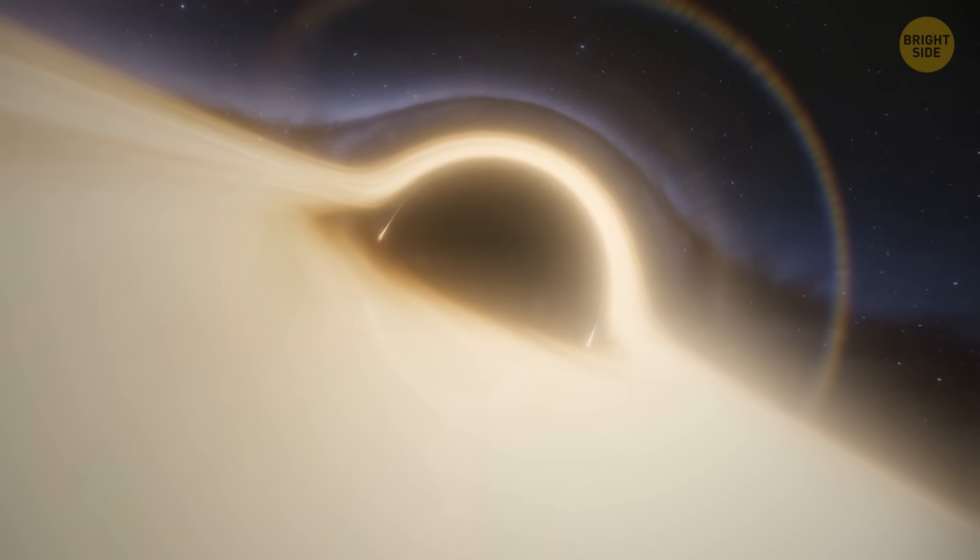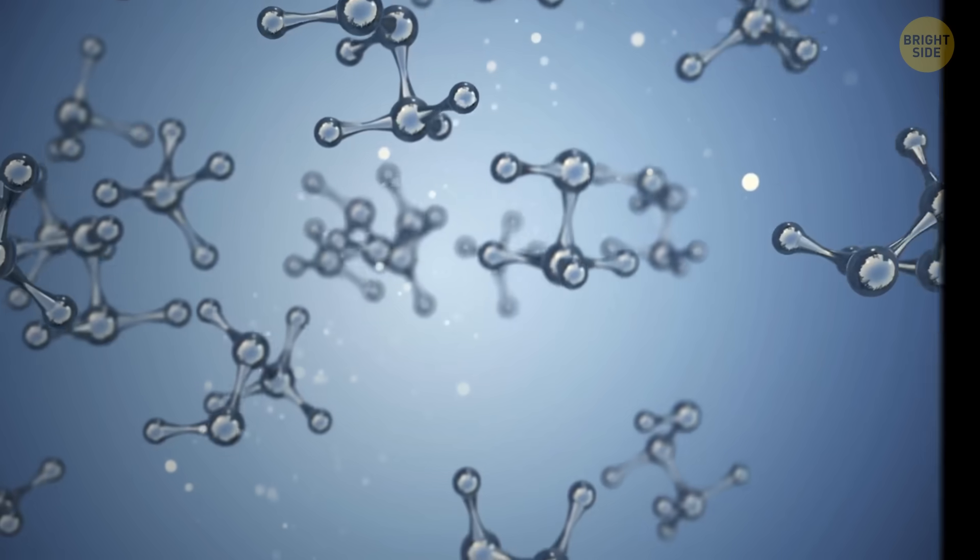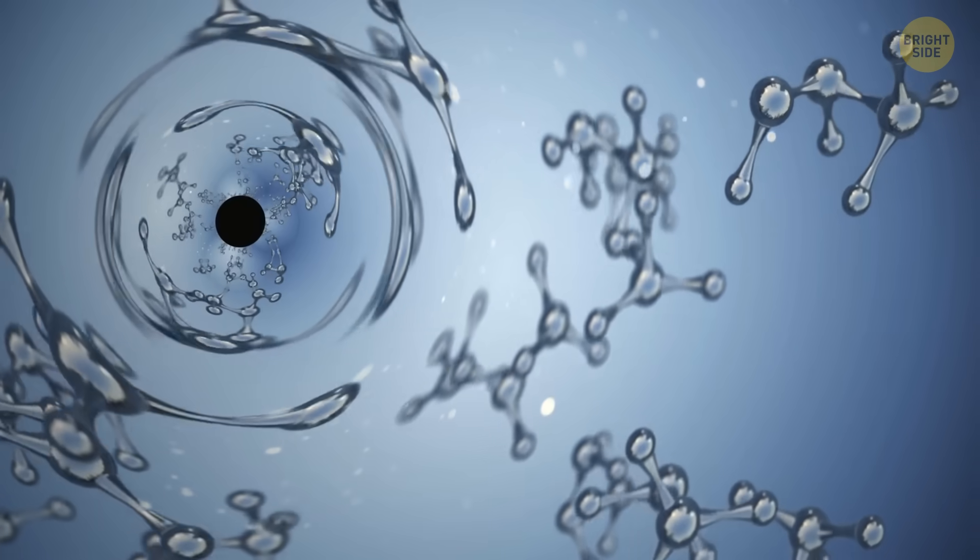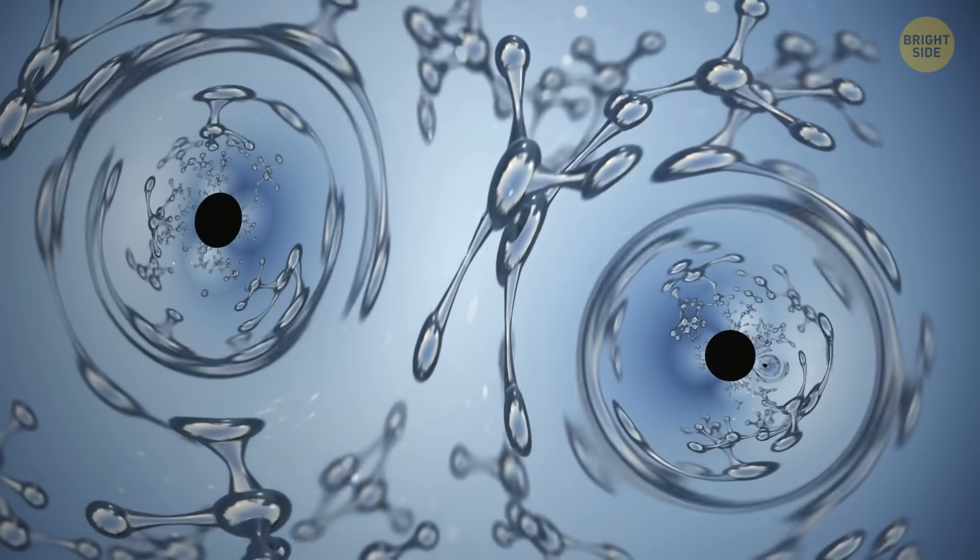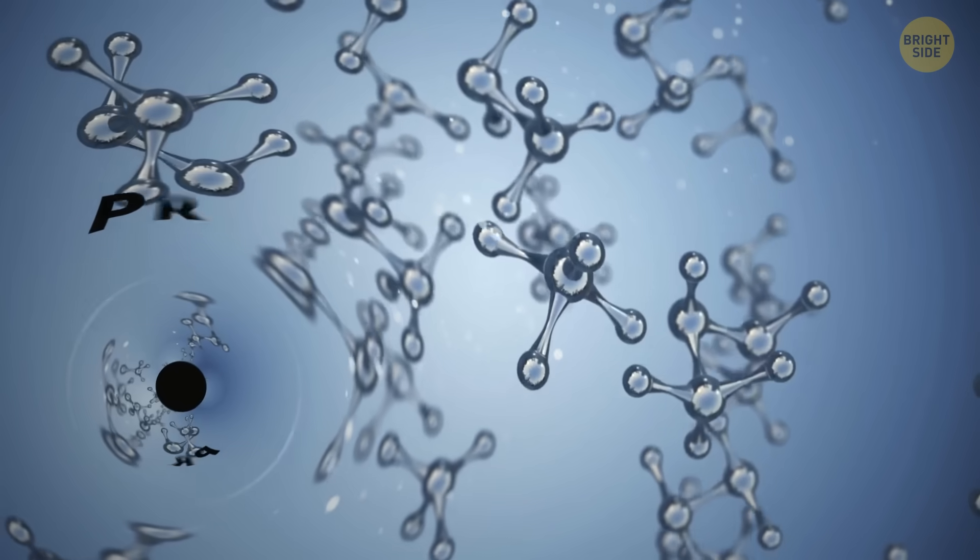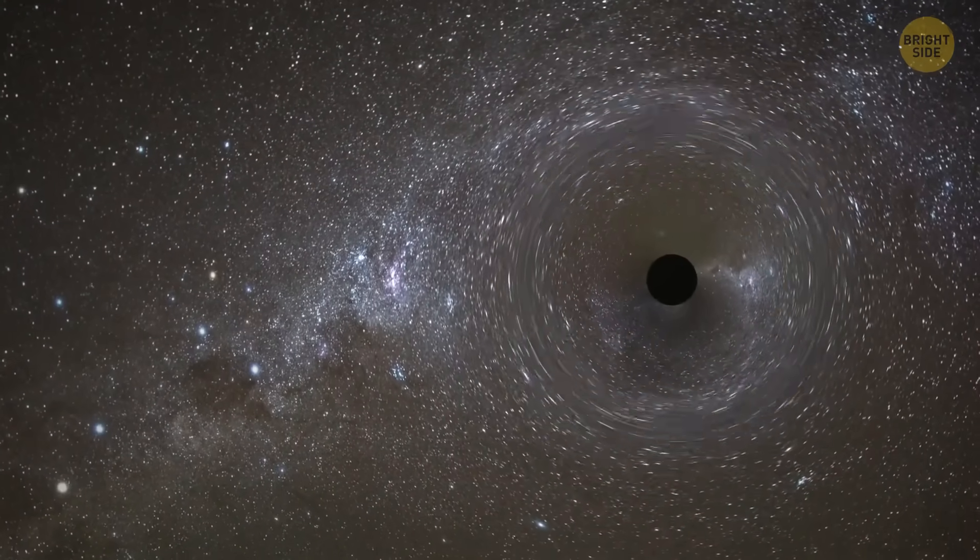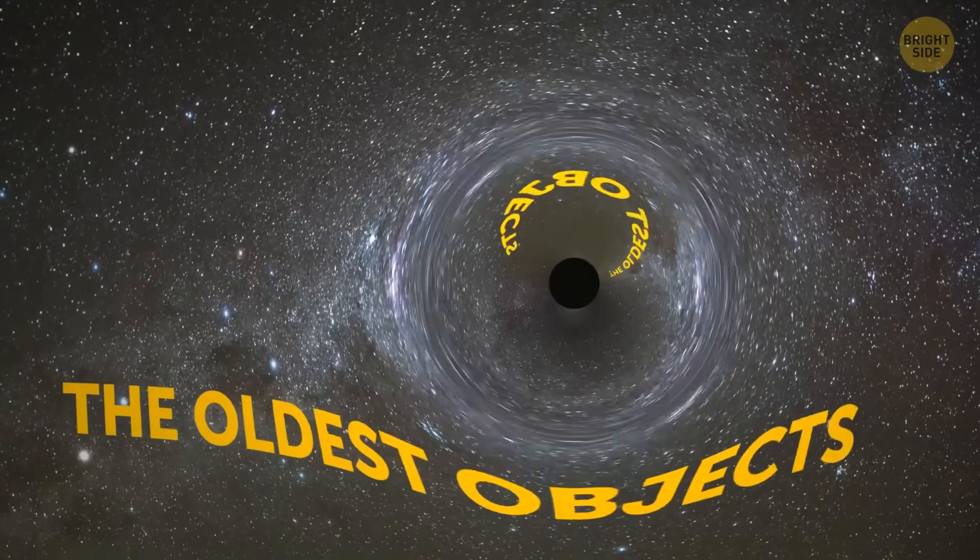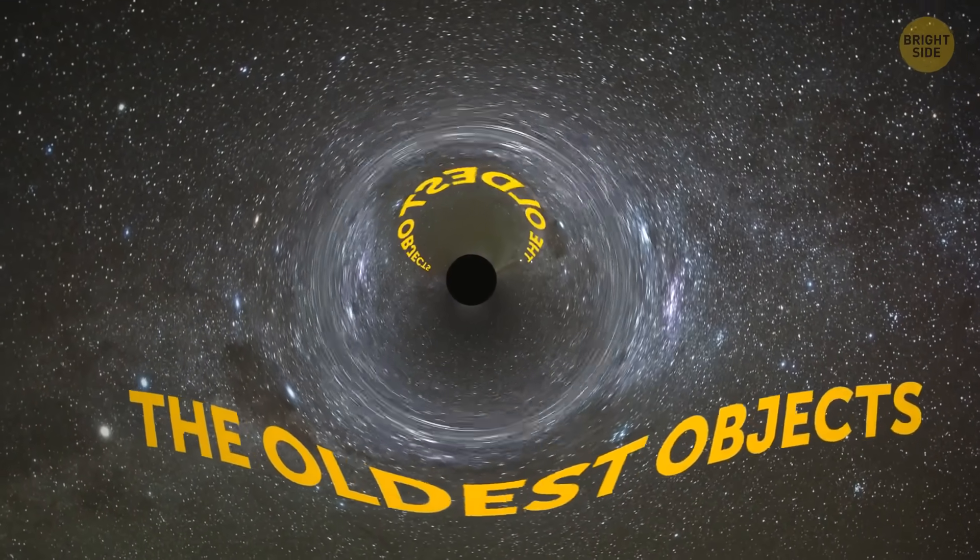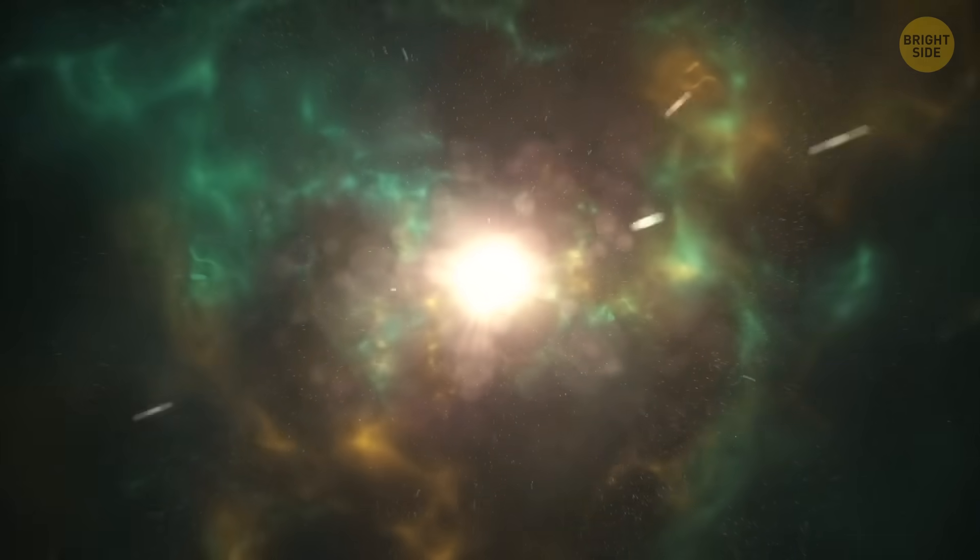For example, can they be very small? Theoretically, yes. There may be black holes with the diameter of one atom, or even less. They're called primordial black holes. They may or may not exist. And if they do, they're probably the oldest objects in the universe, older than the atoms themselves. They would have formed right after the Big Bang.